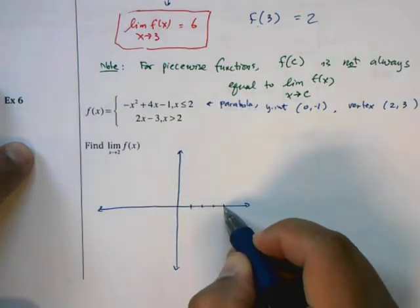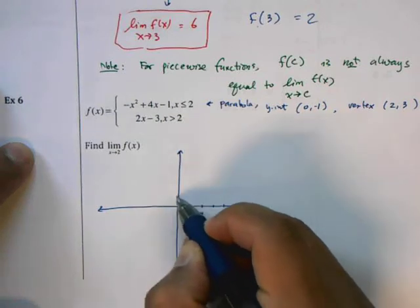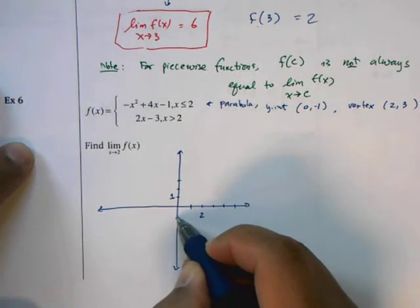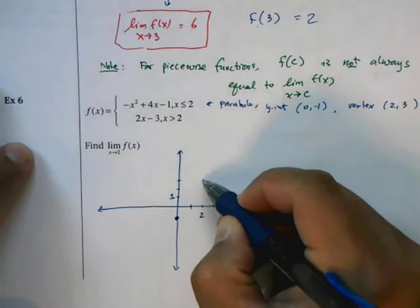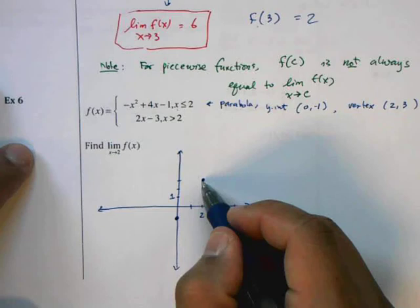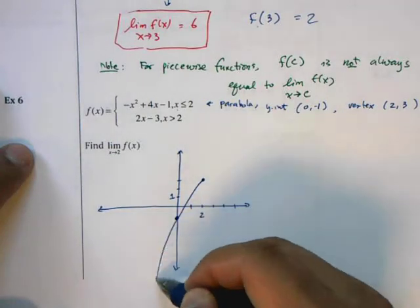So I'm going to graph this here. 1, 2, 3, 4, 5. So I have (2, 3). And again, we're only graphing this for x less than or equal to 2, so we're just graphing this part here.